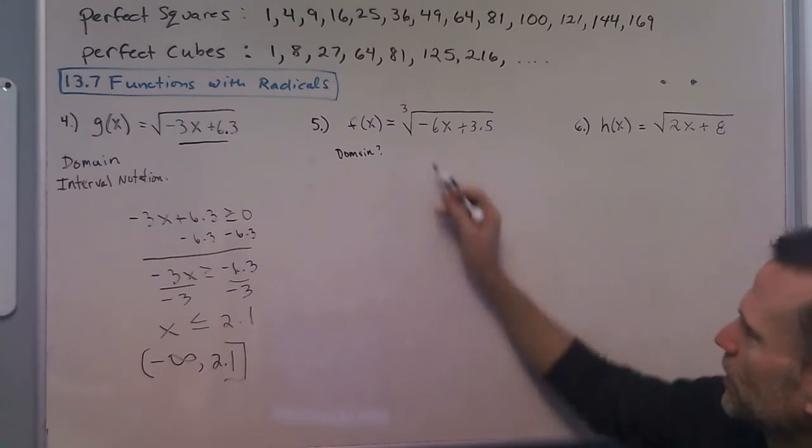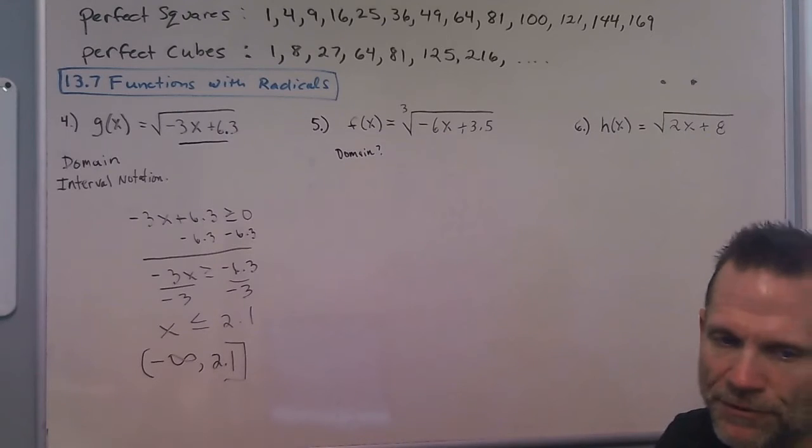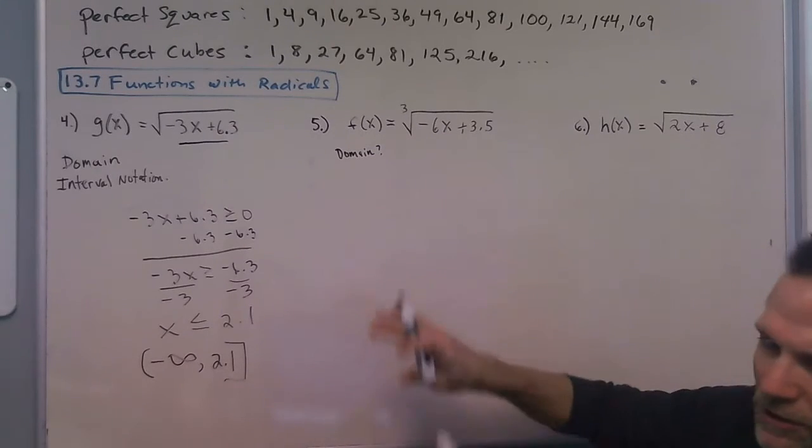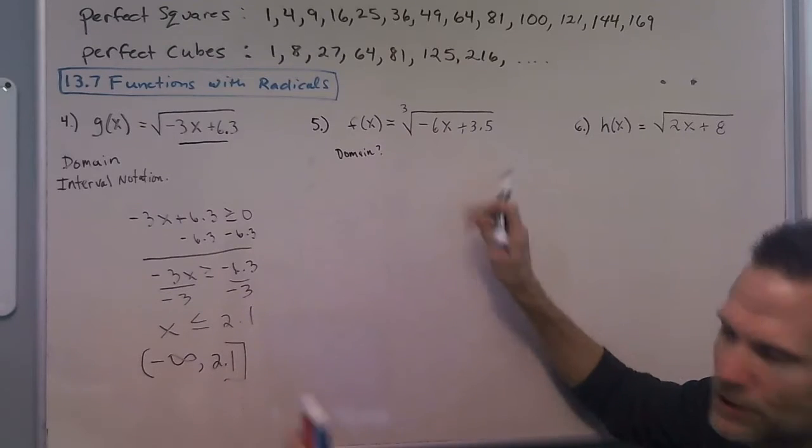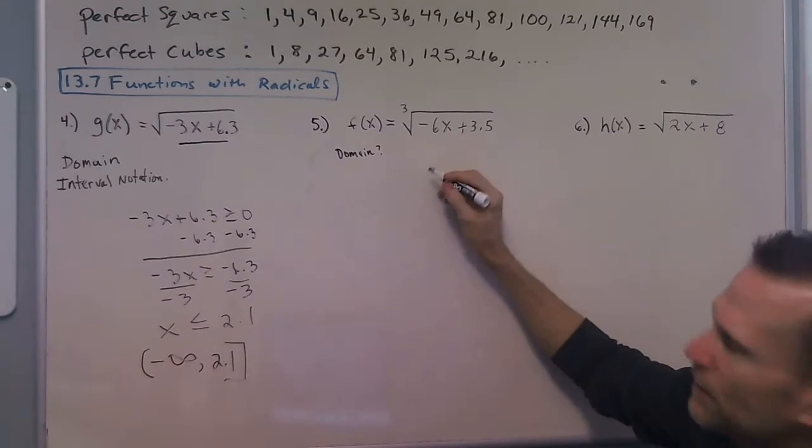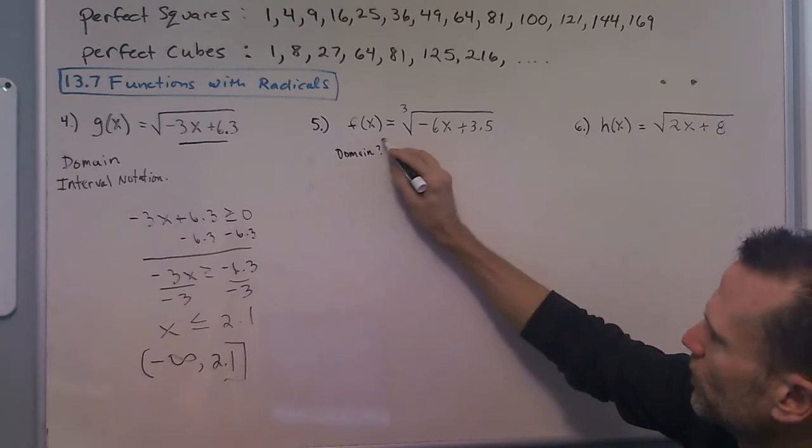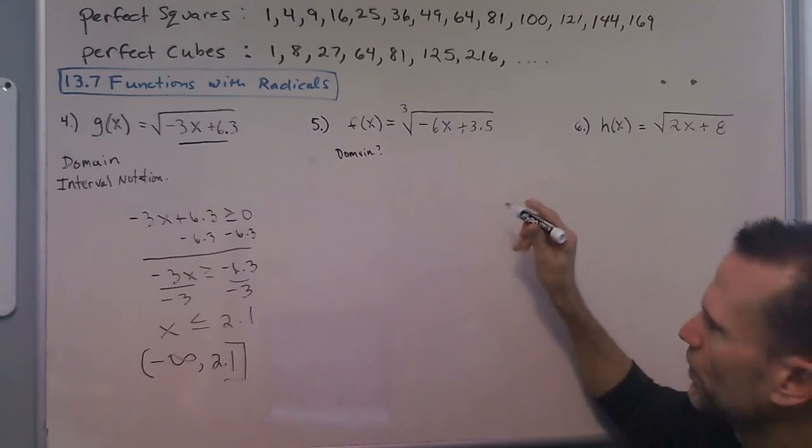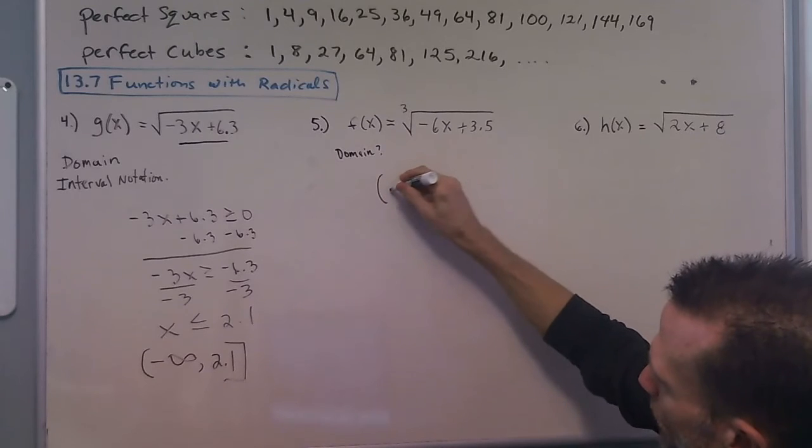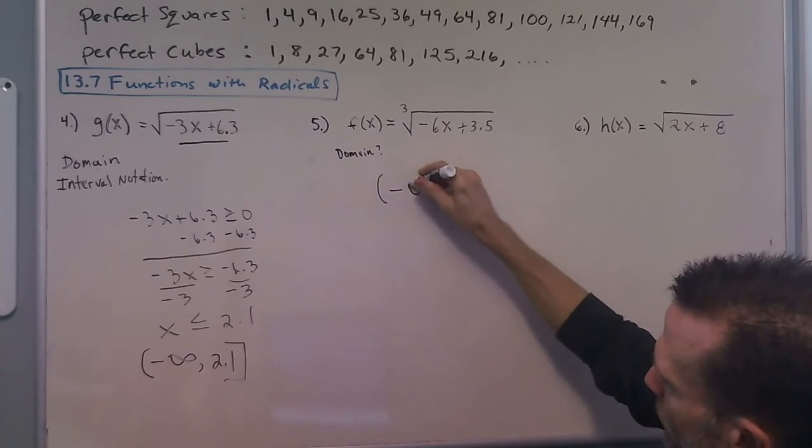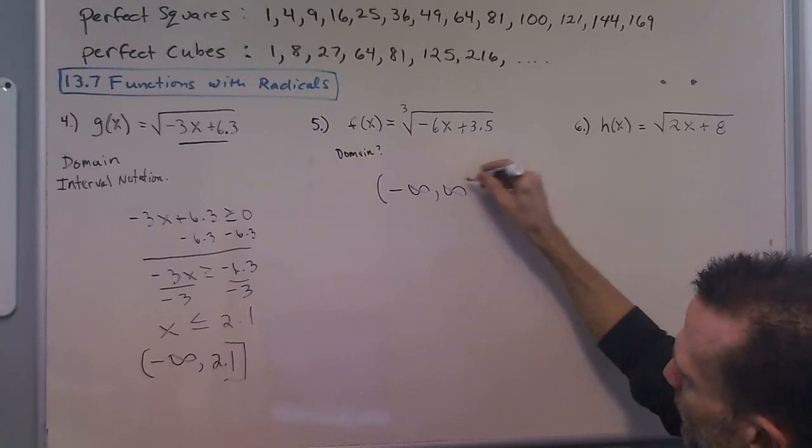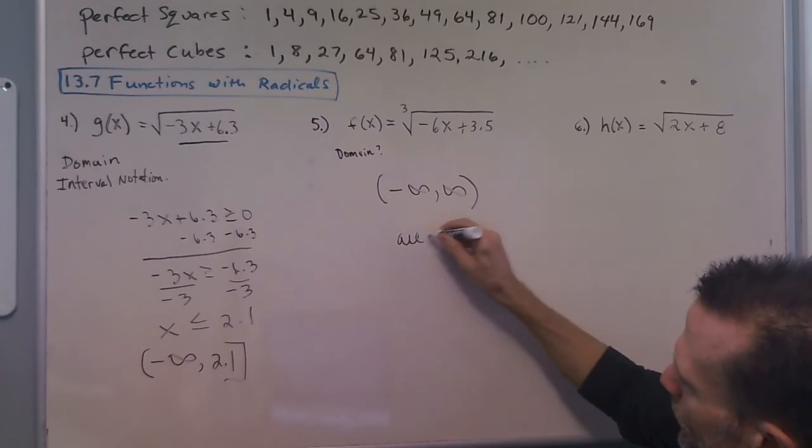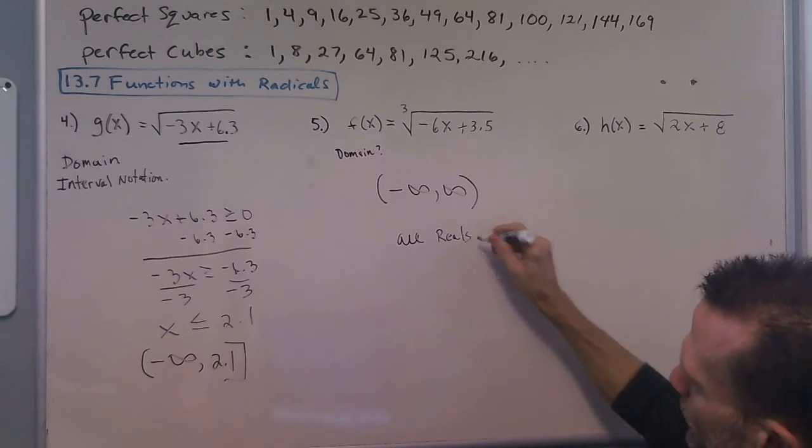Now, if we can remember this for cube root, the domain of a cube root function, if you think of a cube root function, it goes off in both directions. You can put this in Desmos and you'll see that it goes off in both directions. So for cube root and odd functions, we can just remember that it's negative infinity, infinity, or all real numbers.